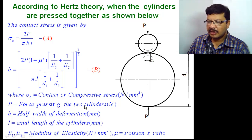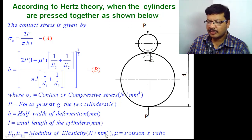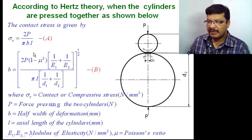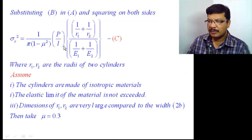In this equation, p is the force acting on the two cylinders, b is the half-width of deformation in millimeters, l is the axial length of cylinders in millimeters, E1 and E2 are the elastic moduli in N/mm², and nu is Poisson's ratio. After substituting this b value into the sigma_c equation, it becomes a more complex expression.